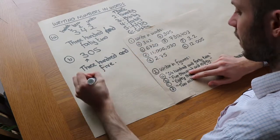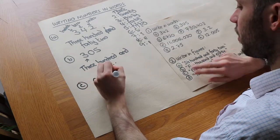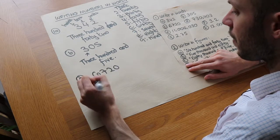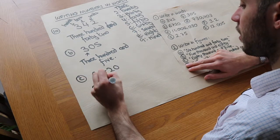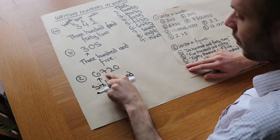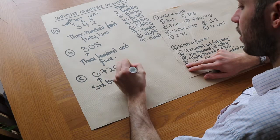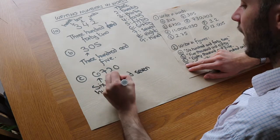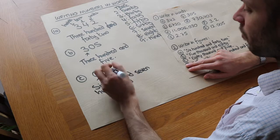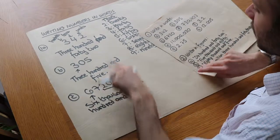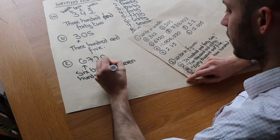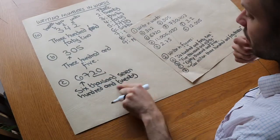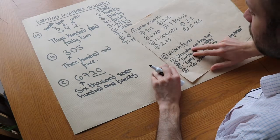Now what about C? We have six seven two zero. That's the thousands digit, so we have six thousand. After the word 'thousand' we don't use the word 'and'. We have seven hundred, and after 'hundred' we do use the word 'and'. We have two tens so that's twenty, and zero units, so we just write 'and twenty'. So it's six thousand seven hundred and twenty.